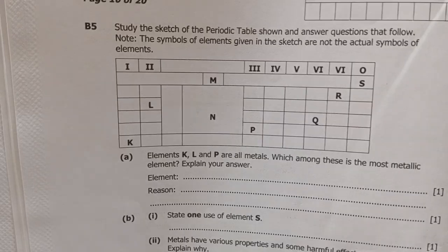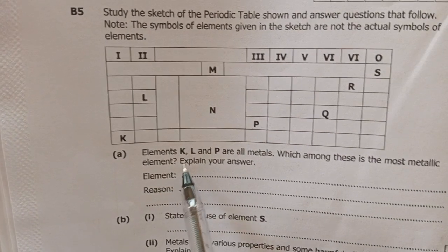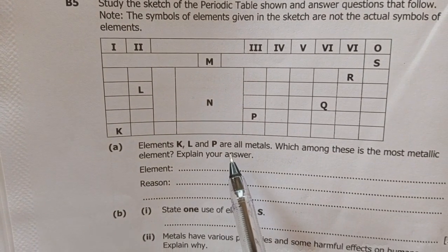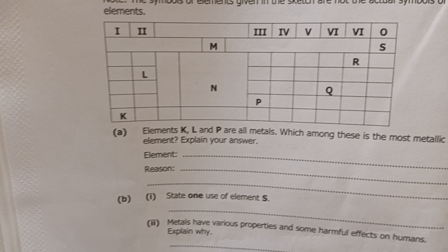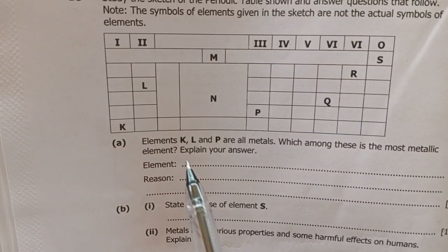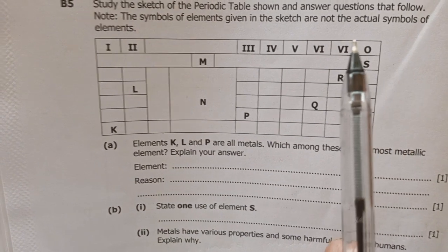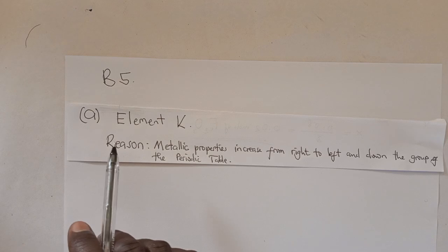You can use the periodic table as a reference. The question states: elements K, L, and P are all metals — which among these is the most metallic element? Explain your answer. The answer is element K. The reason is that metallic properties increase from right to left and down the group.